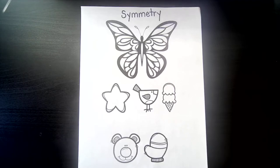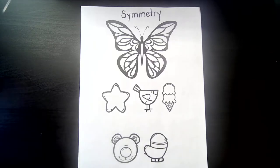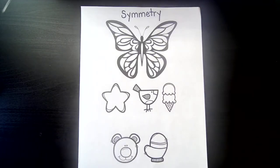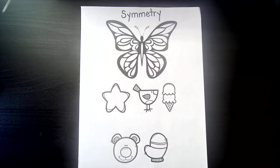Hi little sprouts, let's talk about a math term today: symmetry. Symmetry means you can fold something into two halves and those halves are going to be the exact same. I have some images here and we're going to talk more about symmetry.